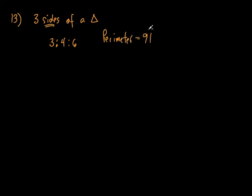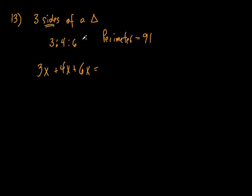Why do we care about the perimeter? Because these are my three sides — this is the ratio of the three sides. If I add 3+4+6, does that add up to 91? Of course not. So what do I do? 3X plus 4X plus 6X equals 91. I had a couple people put equals 180 on the quiz. This is not the angles of a triangle — these are the sides of the triangle, and the sides add up to 91. Don't set these equal to 180.